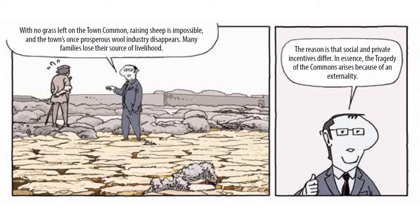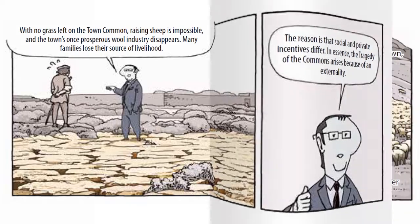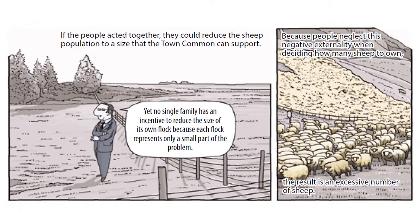The reason is that social and private incentives differ. In essence, the tragedy of the commons arises because of an externality. If the people acted together, they could reduce the sheep population to a size that the town common can support. Yet no single family has an incentive to reduce the size of its own flock, because each flock represents only a small part of the problem. Because people neglect this negative externality when deciding how many sheep to own, the result is an excessive number of sheep.